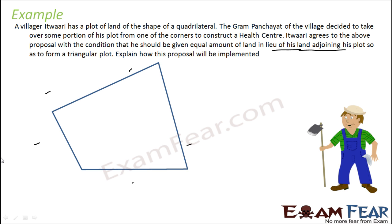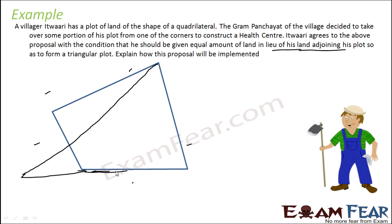So what and how can we compose this? Let us try to make his plot a triangle. We have two sides and let us try to make this land. So you see now, the black portion is the triangle portion. To make this triangle, he has given this portion and he has got this portion.